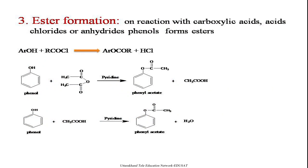Next is the formation of esters. Phenols on reaction with carboxylic acids, acid chlorides, and acid anhydrides form esters. When phenol reacts with acid chloride, an ester is formed with HCl as a side product. When phenol reacts with acid anhydride in the presence of a base like pyridine, we obtain an ester called phenyl acetate with acetic acid as a side product. When phenol reacts with a carboxylic acid like acetic acid in the presence of pyridine, we also obtain an ester with water as a side product.